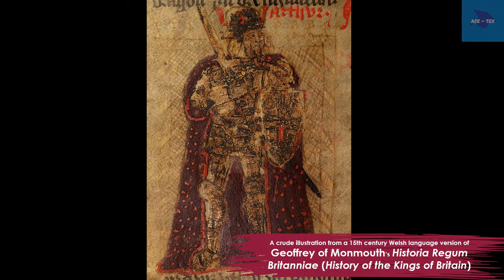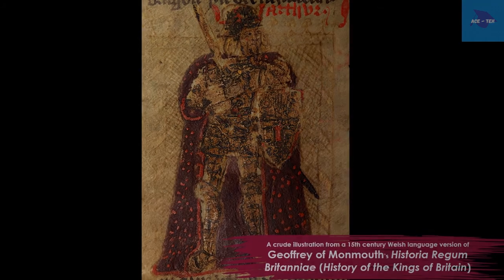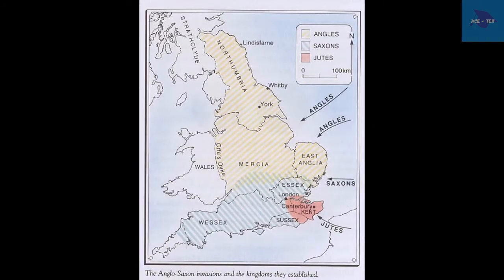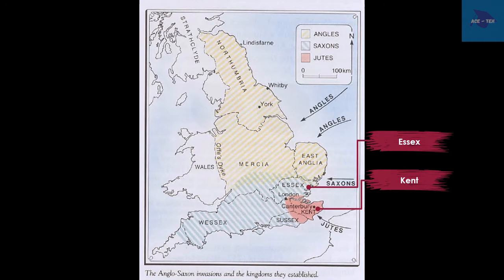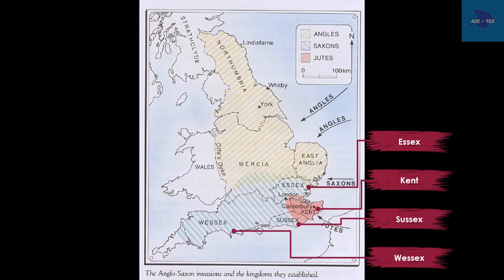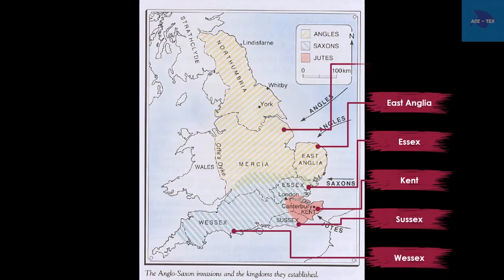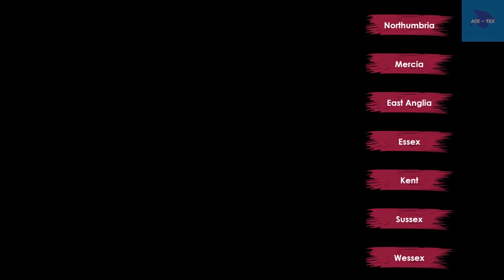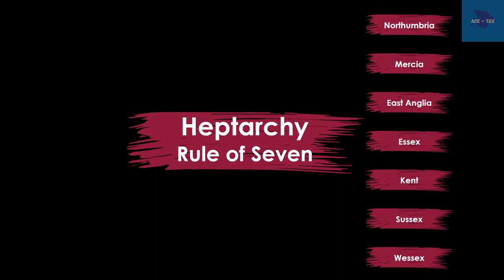The Anglo-Saxons established a number of kingdoms in Britain — there were seven: Kent, Essex, Sussex, Wessex, East Anglia, Mercia and Northumbria. They are known as the Heptarchy, a Greek word meaning rule of seven.